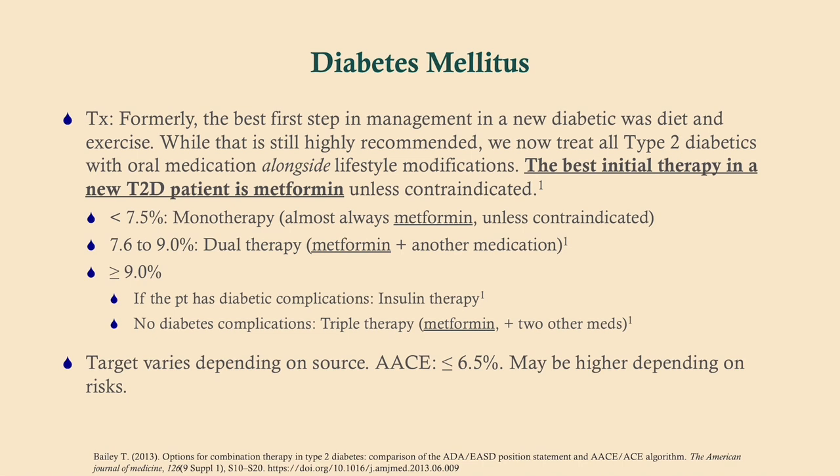The target A1c varies depending on the source. The American Academy of Clinical Endocrinologists recommends 6.5 or less. However, this depends on the patient. For a young patient with a long life ahead, we want tight control to avoid complications. For a 75-year-old, our bigger concern is not retinopathy — it's the risk of hypoglycemia. So we tend to be a little more lax with older patients.